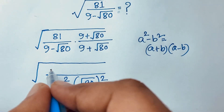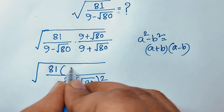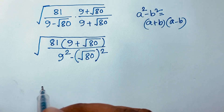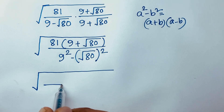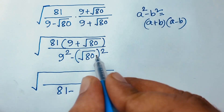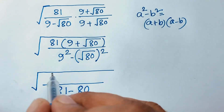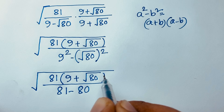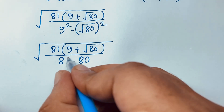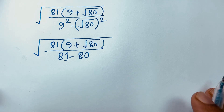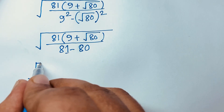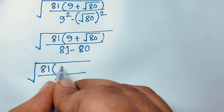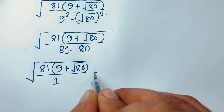So I take 81 here: 81 times (9 plus square root 80). We know that 9 squared is 81, minus square root 80 squared is 80. So the denominator is 81 minus 80, which equals 1.